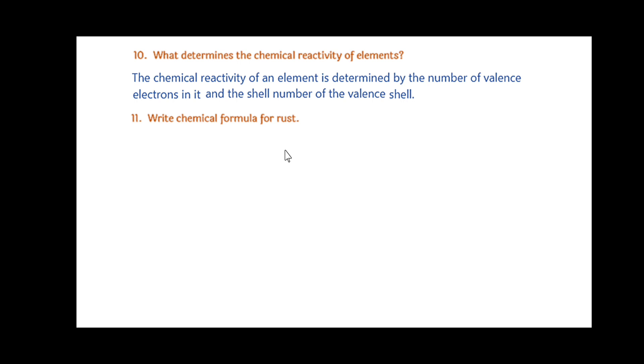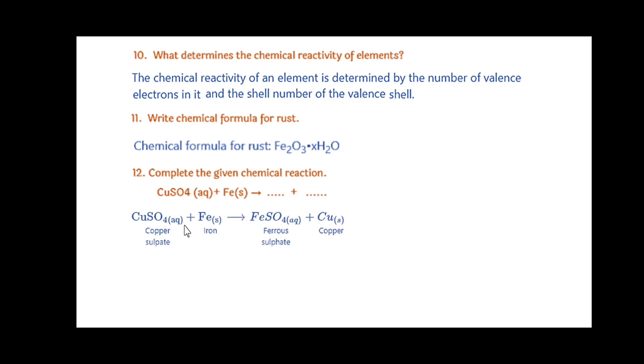Write chemical formula for rust: Fe2O3·xH2O. Complete the given chemical reaction: CuSO4 in aqueous state plus iron in solid state gives FeSO4 in aqueous state plus copper Cu.